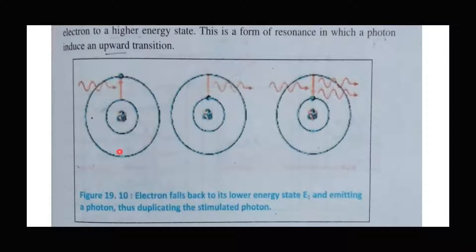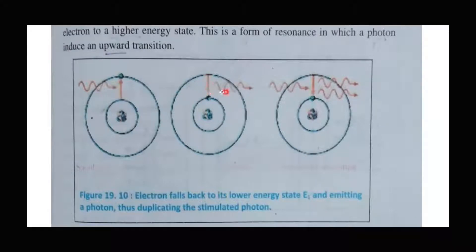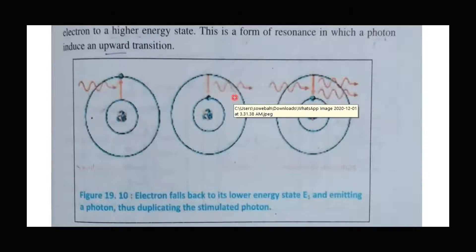Let's suppose you have an atom with energy shells. An electron gets excited to a higher energy state and jumps from one energy level to another. Excited electrons stay for some time in the upper energy level, and after that they de-excite. When they de-excite, they emit photons. The electron absorbs a photon to go to the upper level, then comes back to a lower energy level and emits a single photon. This is known as spontaneous emission.